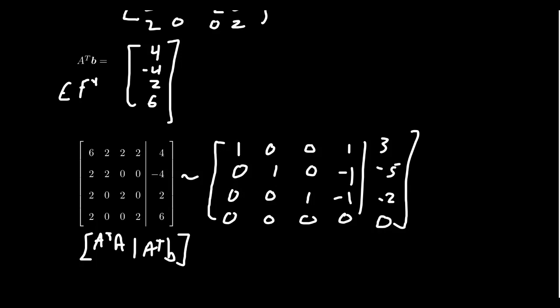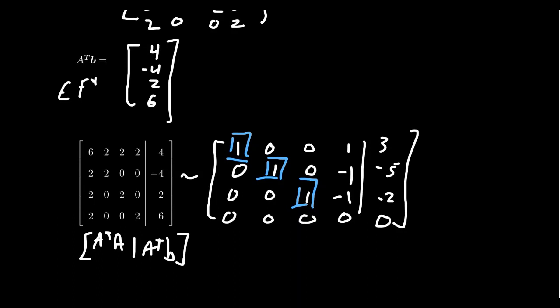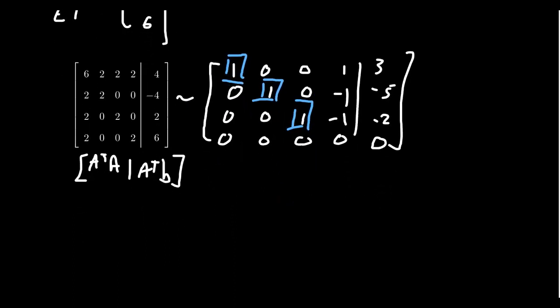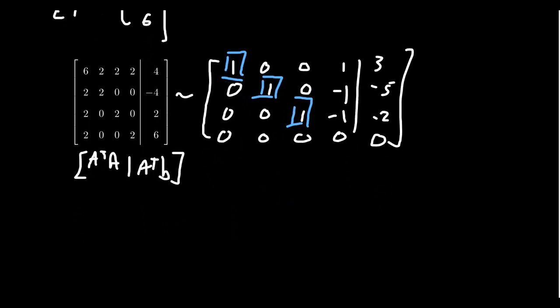So in terms of pivots, we get a pivot in the first column, in the second column, and in the third column. No pivot in the fourth column there. So in terms of my solutions, you get a free variable in the fourth column. We get a particular solution. So x hat as a particular solution. We'll take the particular solution when x4 equals 0. So the first one is 3, the next one is negative 5, the next one is negative 2, the last one is 0.